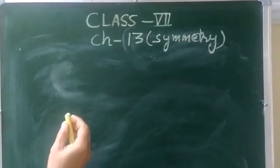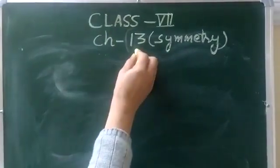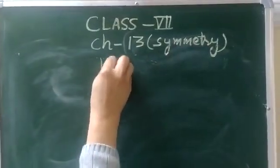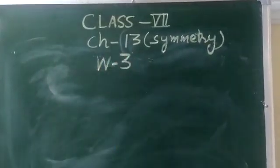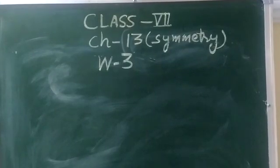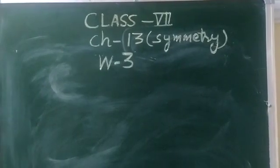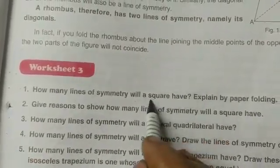Good morning students. We are doing chapter number 13, Symmetry. Today we will start at worksheet 3. The first question of worksheet 3 is: how many lines of symmetry will a square have?